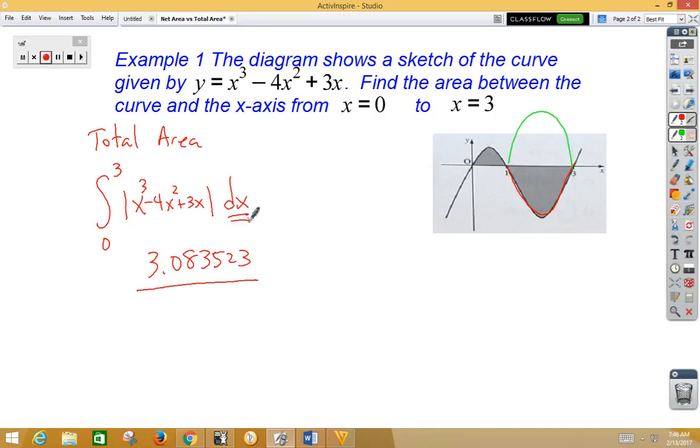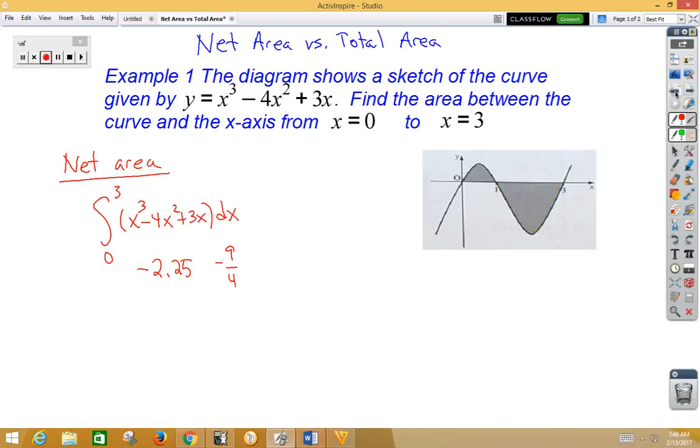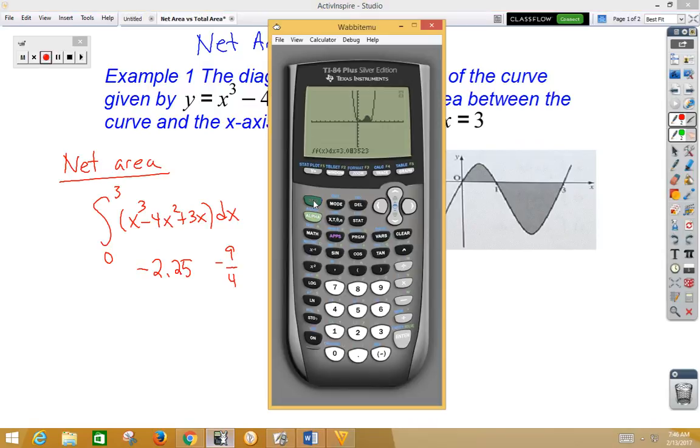Now, let's do both of these problems a second way. So, if I go back to net area, and I don't want to use the graph, my other option to do this, if I get out of the screen, would be using math 9. Math 9 is known as fnInt. And if you have a newer version of the calculator, notice the integral symbol just comes up, and you're just filling in what you wrote.